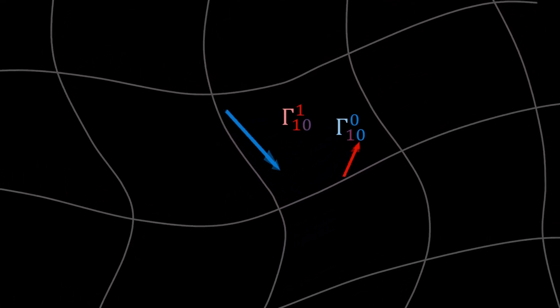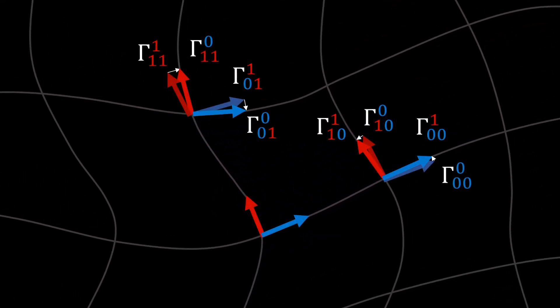In our two-dimensional case, these components exist in eight different versions, two components for four different vectors. These are called Christoffel symbols.